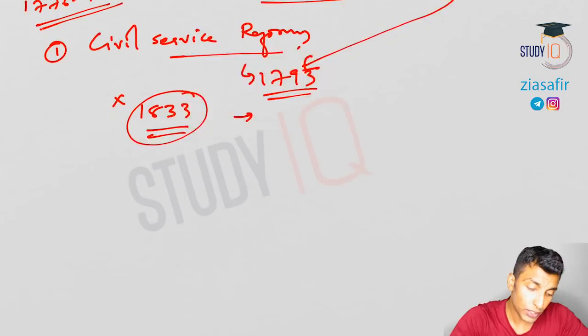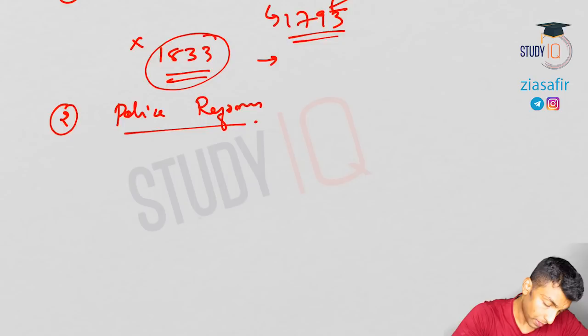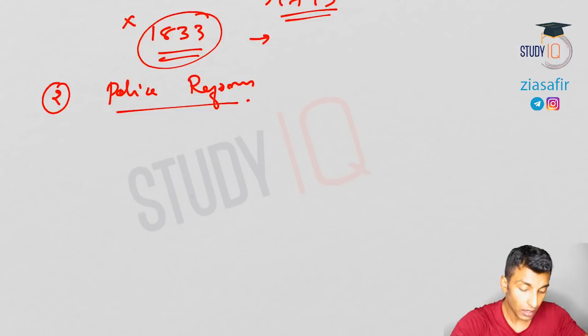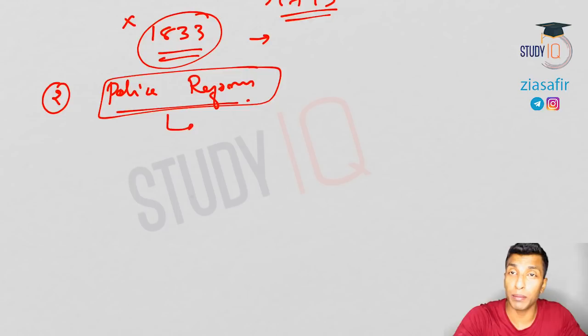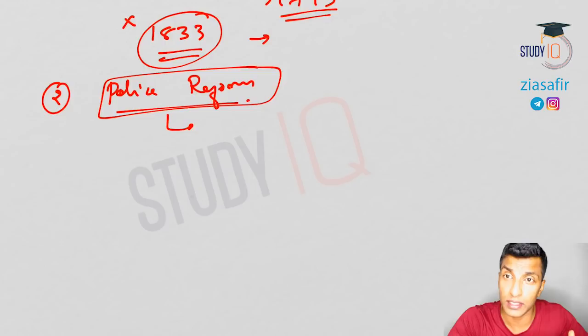The second reform is police reforms. Lord Cornwallis introduced police reforms in parts where the British had established total control in India. Before this, when we discussed the quinquennial settlement, zamindars enjoyed the power of policing. Now an organized setup was established — police stations were set up, police officials were appointed, and the head of the police station became the Dharoga.